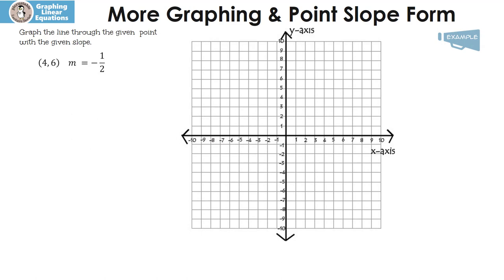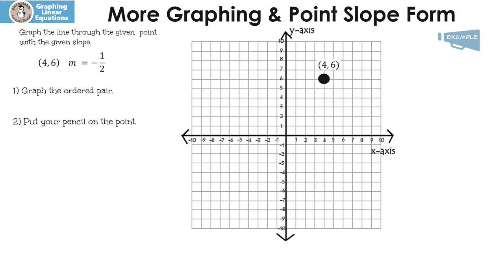Graph the line through the given point with the given slope. The first thing we need to do is graph the ordered pair (4, 6). Then you're going to put your pencil on the point — this is really important. So here's my pencil on the point.